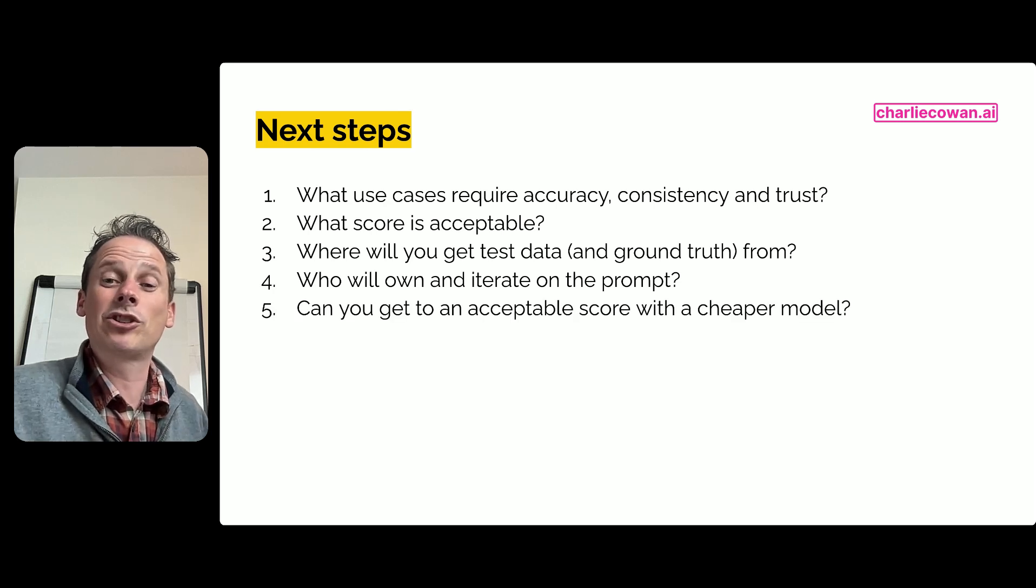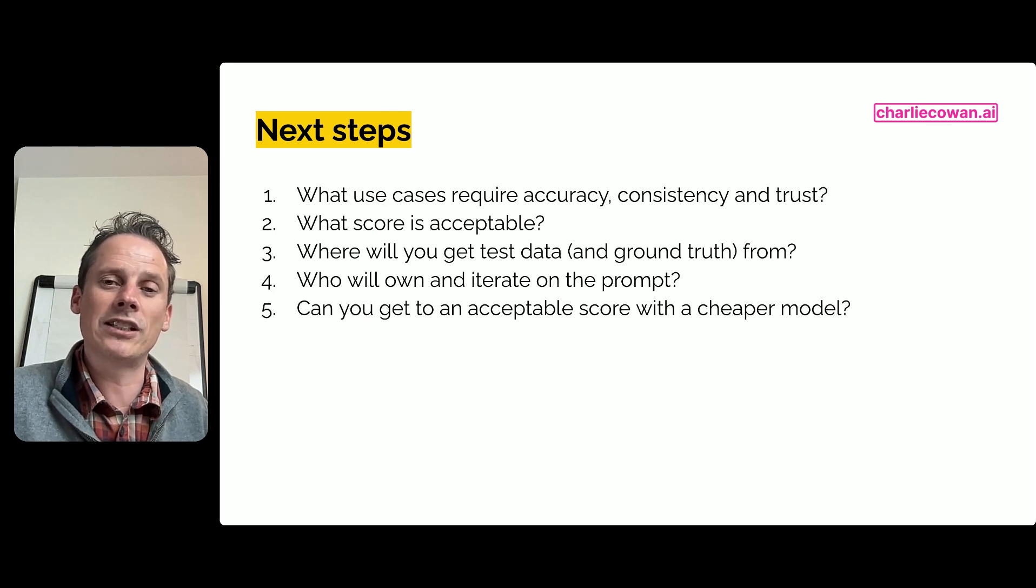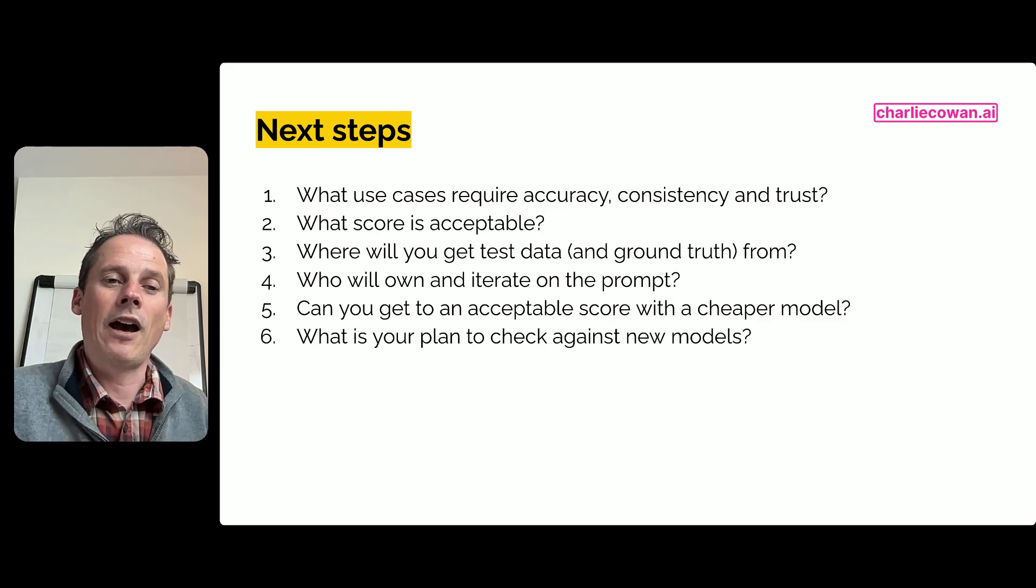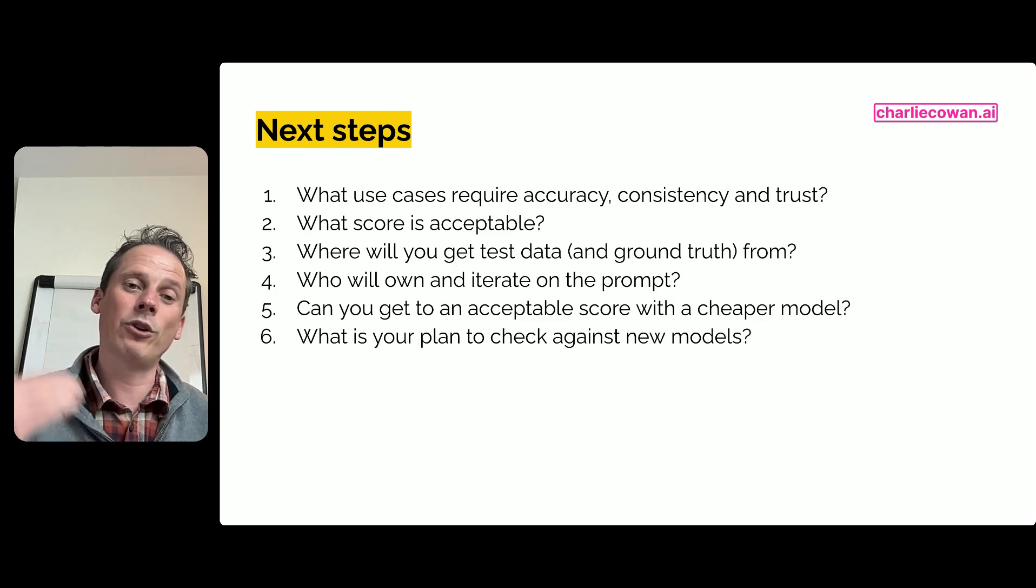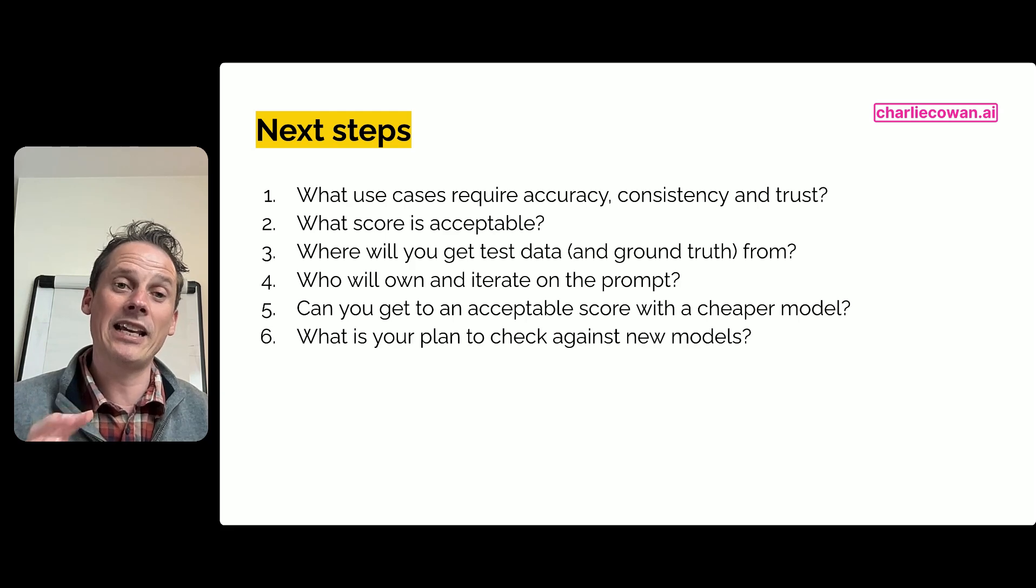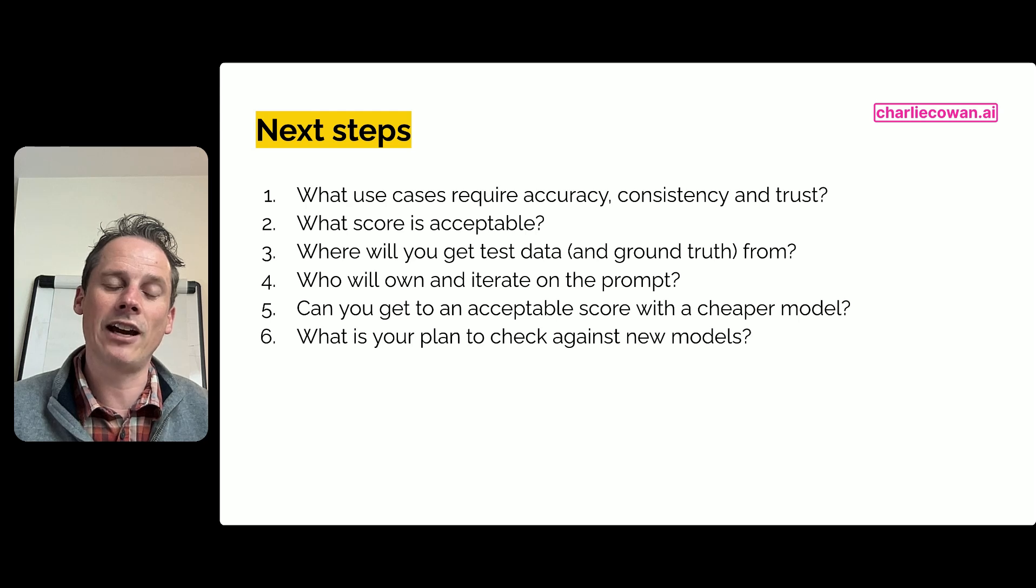Can you get to an acceptable score with a cheaper model? So in our example there, where I just showed you scoring of those 50 website visitors, we had 100% success rate and we were using 4.1. But could we use one of the mini models and still get 100% and therefore we can deliver the response at a much cheaper rate? And then finally, thinking about the jagged frontier moving forwards, you may have an eval test case that does not pass. You get 40% success and you say that is not good enough for this to go into production. So what is your plan to continue to iterate on that prompt and to test it against newer models as they come through? And as that 40% becomes 50, becomes 60, becomes 90%, suddenly you're going to hit this one day when this use case is behind the jagged frontier and you can start to take it out to your customers.